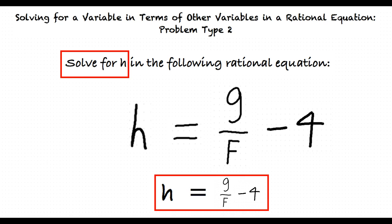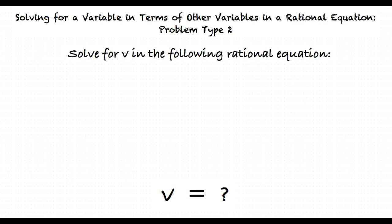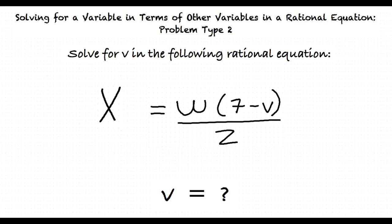Let's do one more example. In this example, we will solve for v. x equals w times the quantity 7 minus v all over z.